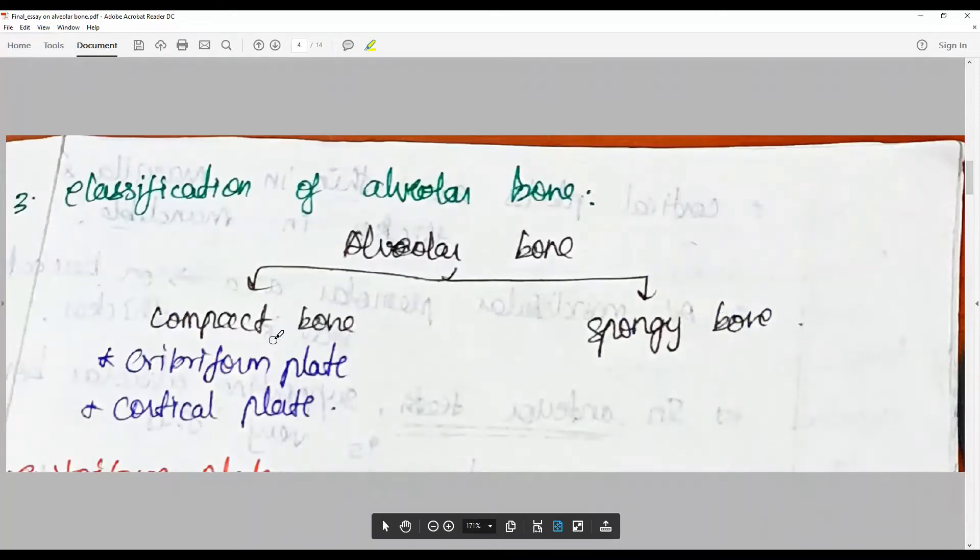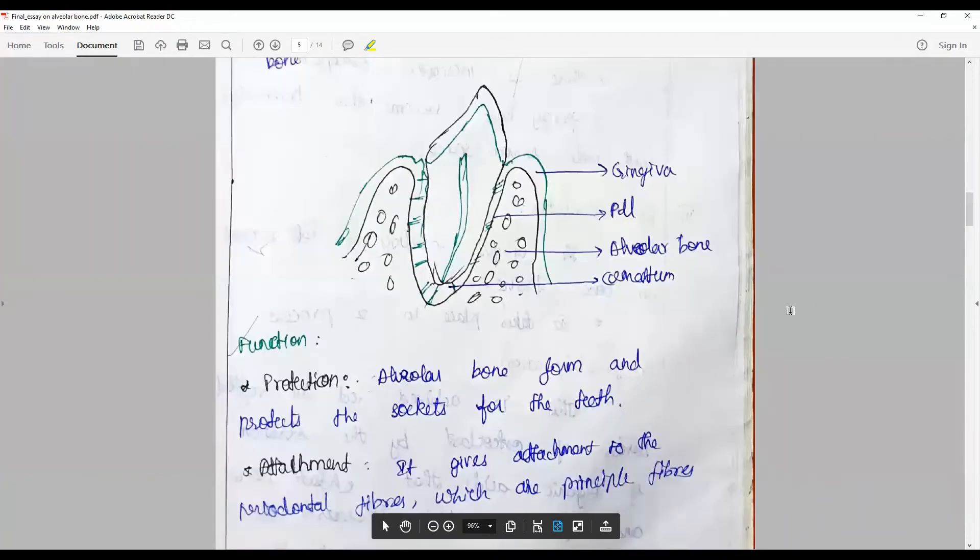The functions include: alveolar bone forms and protects the sockets of the tooth. It gives a space for the attachment of periodontal fibers, which are principal fibers of the periodontal ligament, and helps the tooth to survive.